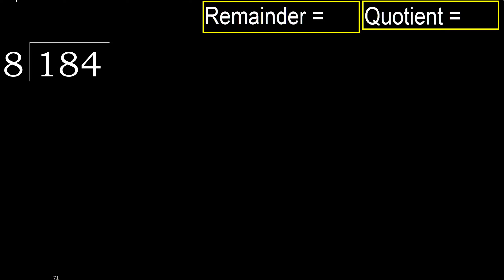184 divided by 8. 1 is less, therefore next. 18 is not less, therefore with 18. 8 multiplied by which number is nearest to 18 but not greater? 8 multiplied by 3 is 24, which is greater.